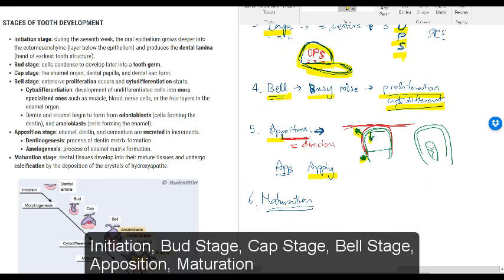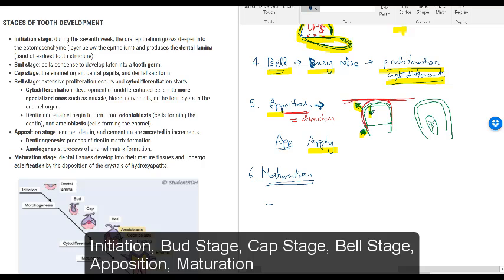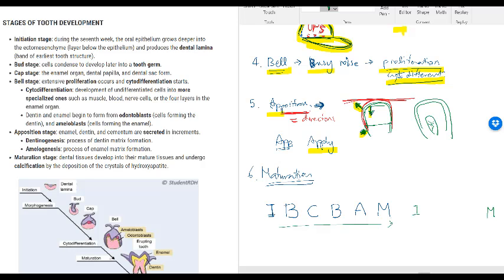The last thing I want to remember is the different steps. We had initiation, bud stage, cap stage, bell stage, apposition, and maturation. Sometimes they may ask you, 'What are the six different steps in order?' For that, you need to remember those six different steps. How can you do that? If it was me, I would not even create an acronym because it takes time. I would do it this way: initiation and M, I know it because it's easy - maturation. I'm done. But what goes in the middle? I know there are four different things. This is how you do it: B, C, B, A in this order.